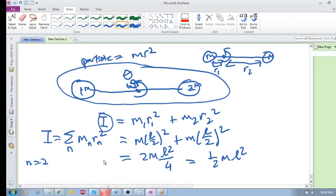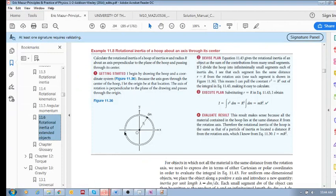So when we are doing, so this is for particles. But when we are doing a continuous distributed extended object, we're doing essentially the same thing. We are summing up the rotational inertia of every single particle. Well, it's not a particle. Every single segment in this system.